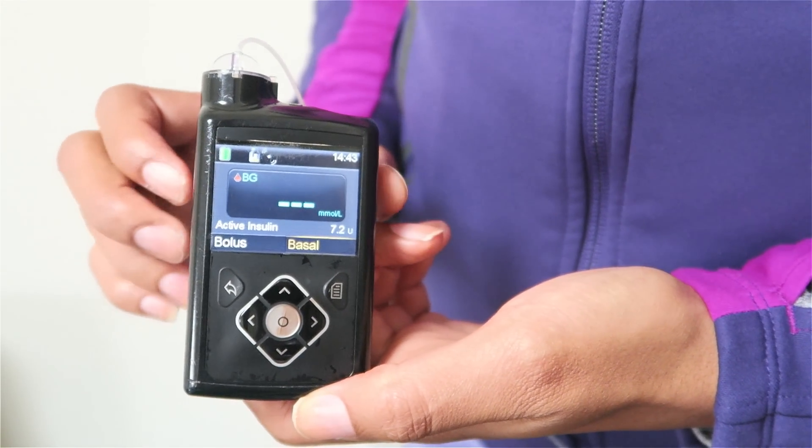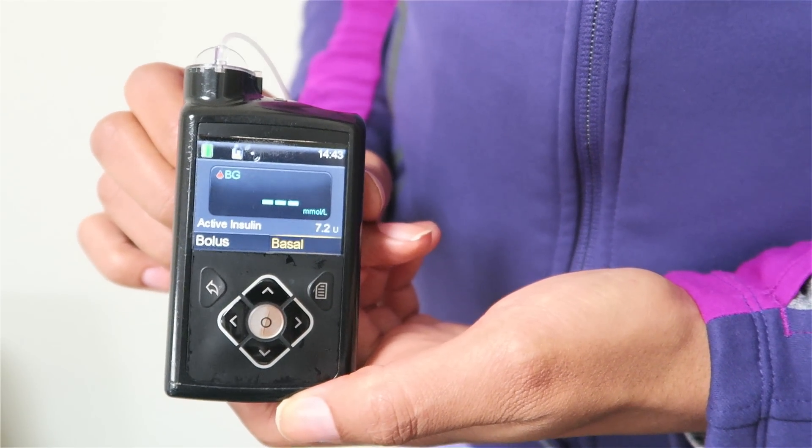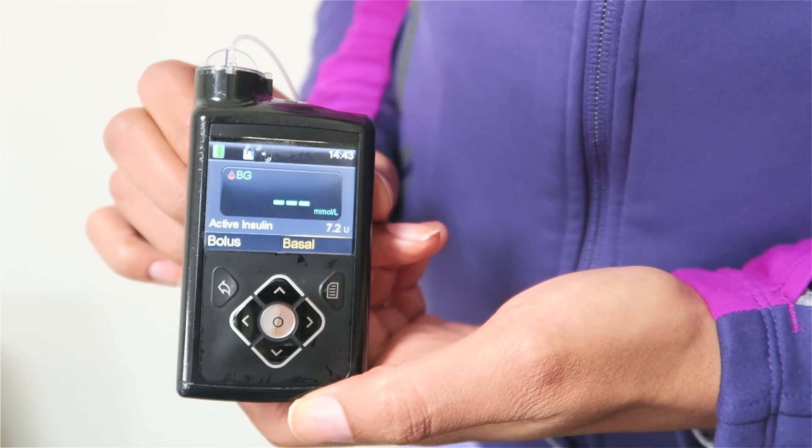On an insulin pump, any insulin pump, not just the Medtronic MiniMed 640G, you can reduce your background rate or increase it as you need to.